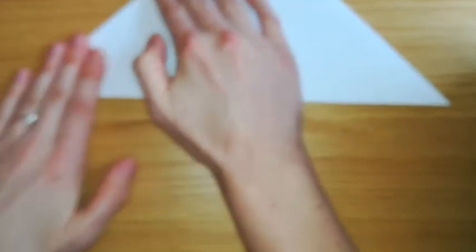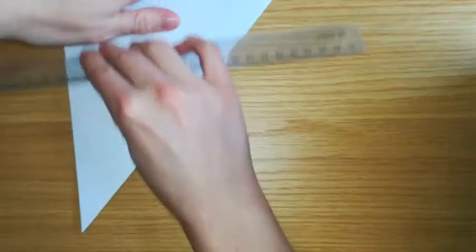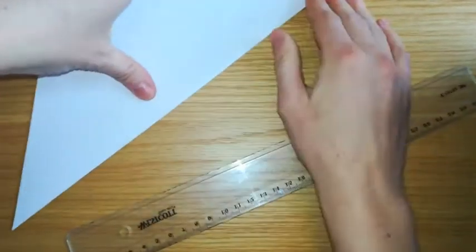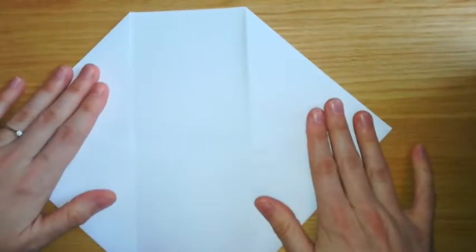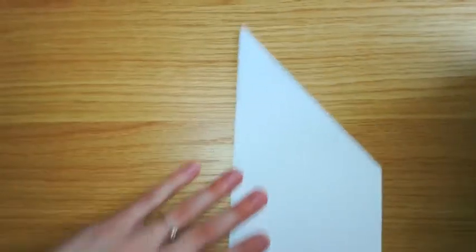And then fold that closed again. Top tip: if you do have a ruler, actually run it back over so that the creases are really sharp and smooth across the surfaces with sharper corners. Perfect. The next thing we're going to do is fold this in half.